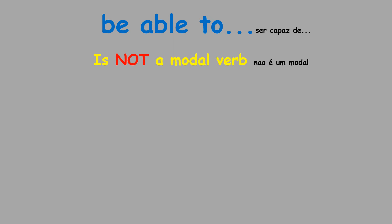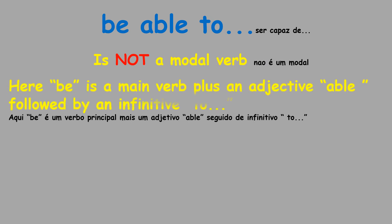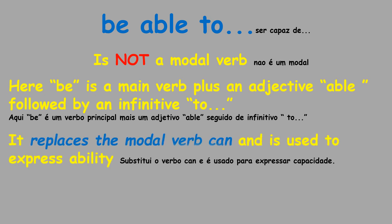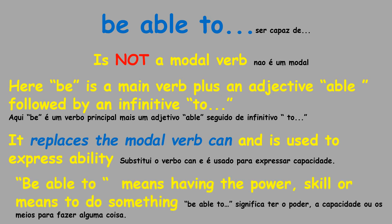Let's see the substitute of the verb 'can': 'be able to'. 'Be able to' is not a modal verb. 'Be' is a main verb here plus an adjective, 'able', followed by an infinitive with 'to'. But it replaces the modal verb 'can' and is used to express ability. So 'be able to' means having the power or the skill or the means to do something.